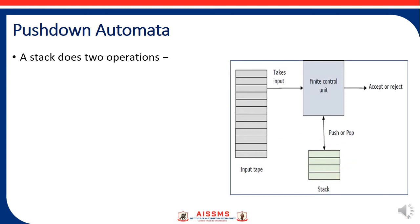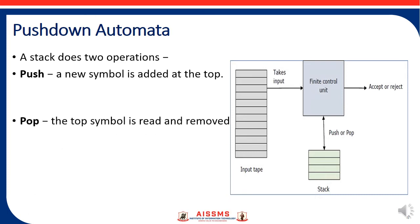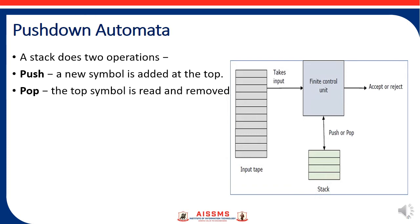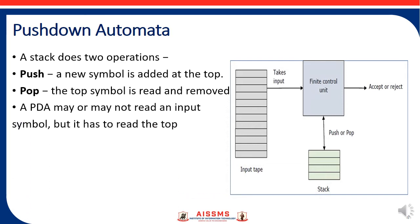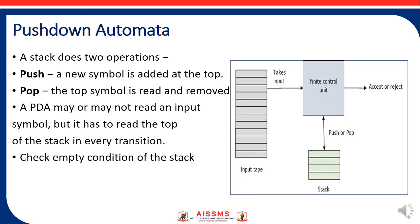As this stack is involved in the Pushdown Automata, it comes with two operations. The first operation is the Push operation — whenever a new symbol is added to the top of the stack, we say we push the symbol. Similarly, the Pop operation reads and removes the top symbol. The PDA may or may not read an input symbol, but it has to read the top of the stack, which is considered in every transition.